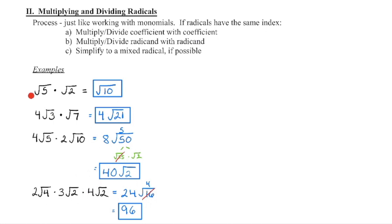The coefficient on the first example is 1 and 1, so 1 times 1 is 1, and 5 times 2 is 10. Then 4 times the coefficient of 1 is 4, and 3 times 7 is 21. There is no perfect square we can remove from either of those radicands.